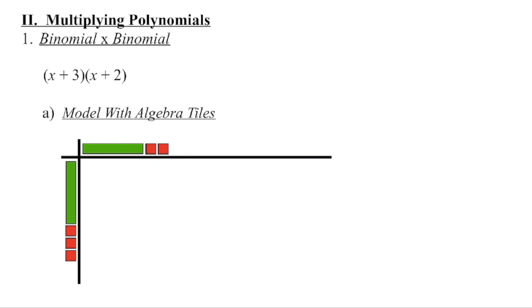We're now going to take a look at how you would multiply two binomials together. I'm going to begin with my algebra tiles. I'm going to take one factor, x plus 3, and put it along the length of the rectangle. I'm going to take the other factor, x plus 2, and put it along the width or height of the rectangle. Then we're looking for the algebra tiles that will fill in that rectangle.